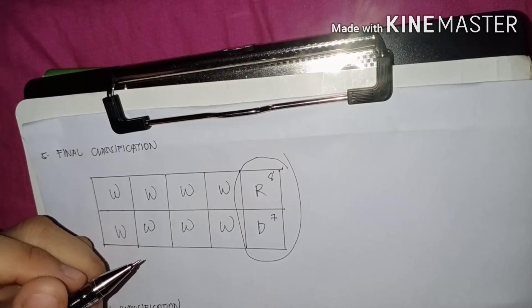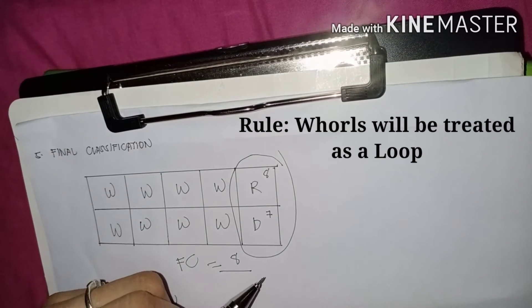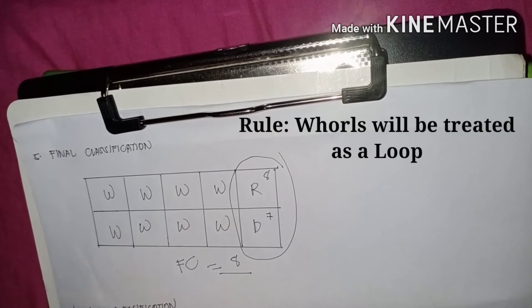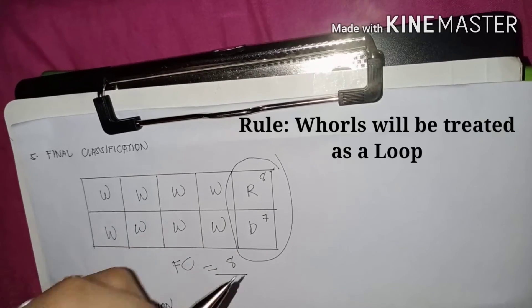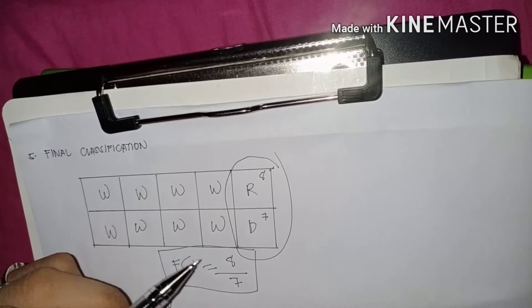Next is the final classification. In final classification, only the little fingers are involved. Whorls will be treated as a loop. The right little finger has a radial loop with 8 ridge counts. The left little finger is a double loop, and since whorls are treated as loops, we do ridge counting as well, resulting in 7 ridge counts. So the final classification is 8 over 7.